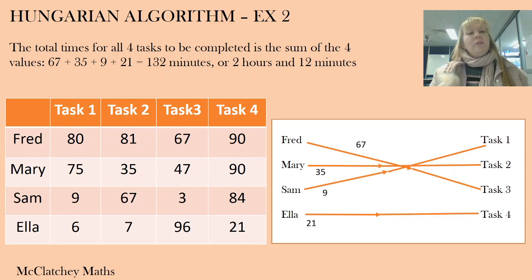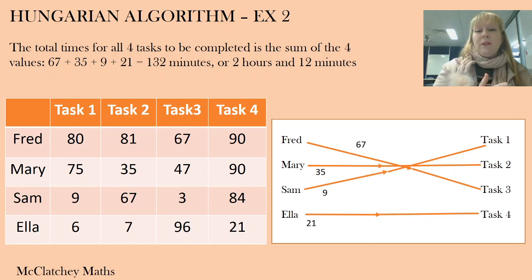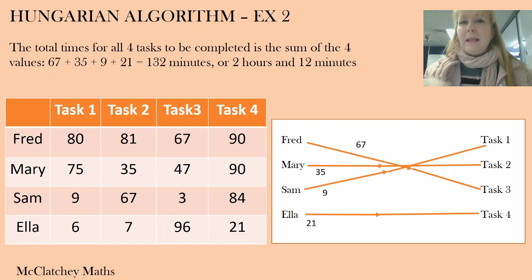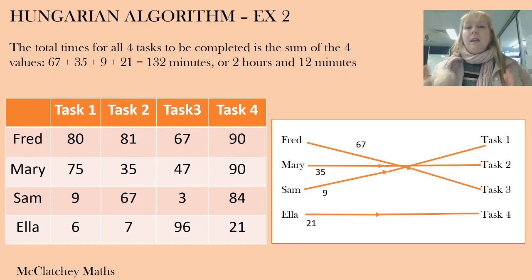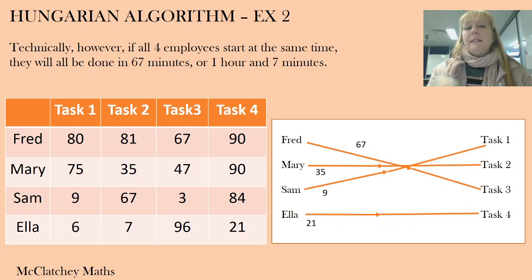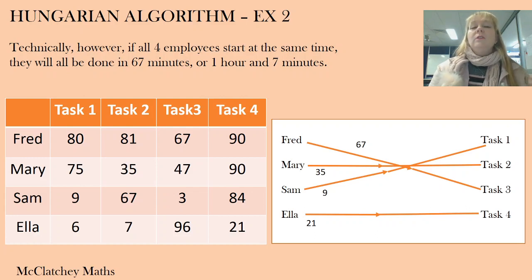The total time for all four tasks to be completed is 132 minutes, or 2 hours and 12 minutes. You might wonder why they wouldn't all work at the same time, but consider that these could be steps in a process — like an assembly line where Sam does the first step, then Mary, then Fred, then Ella. The shortest time to complete one unit along that line is 2 hours and 12 minutes. If instead all four employees started their individual tasks simultaneously, they'd all be done in 67 minutes, or 1 hour and 7 minutes.